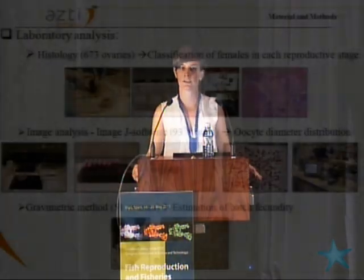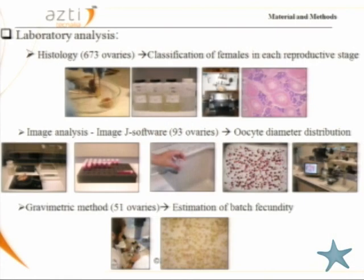We analyzed the gonads in the laboratory histologically to classify each female in its reproductive state. Then, for some of them we applied image analysis to assess the oocyte diameter distribution. Finally, for females in the most mature state, we applied the gravimetric method to estimate batch fecundity.